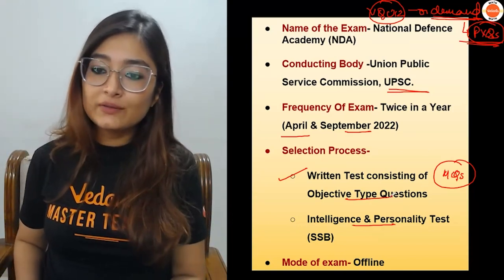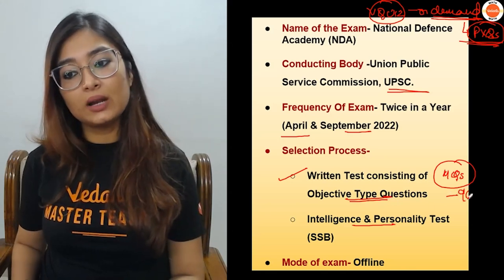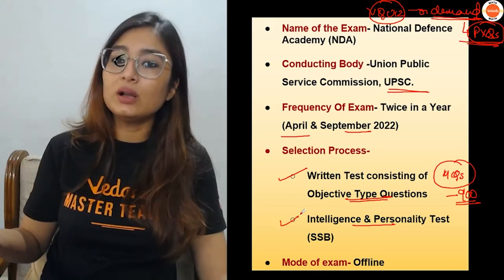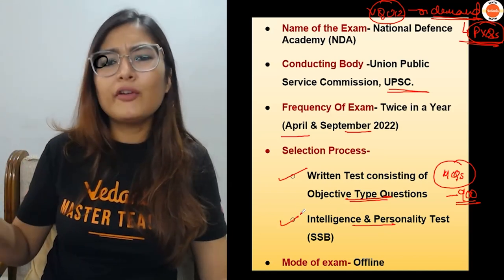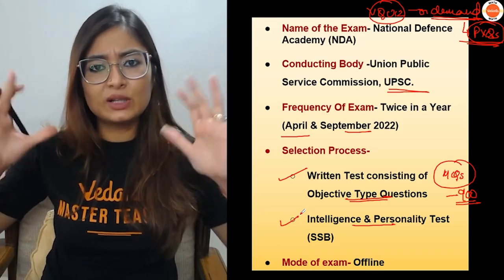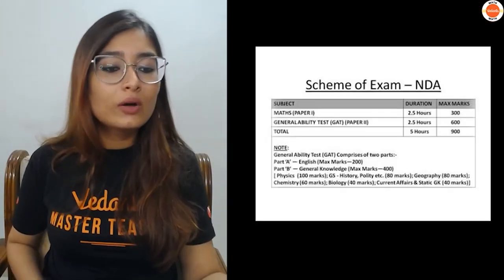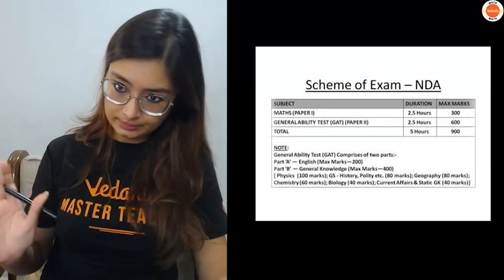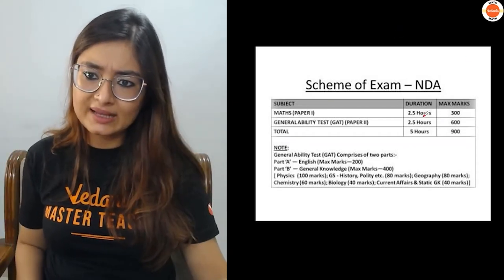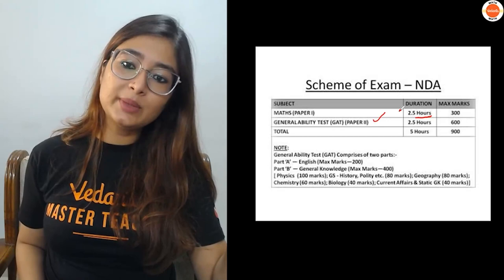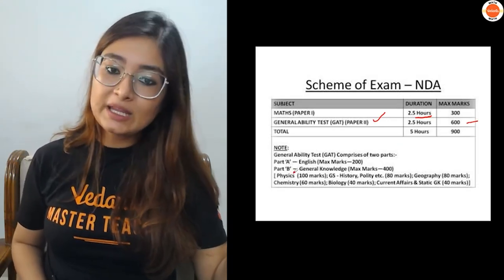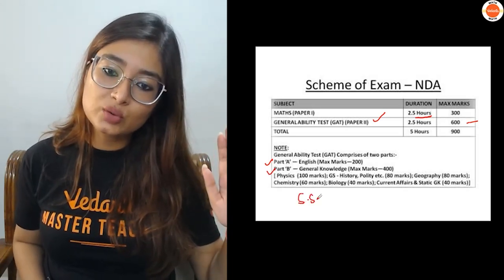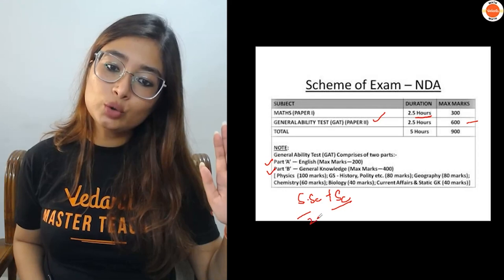If you qualify the objective test — this is a total of 900 marks — you will then take the intelligence or personality test. You also need to qualify as medically fit. These exams are offline. The first paper is worth 300 marks and will be Maths. The other paper is the General Ability Test, worth 600 marks — 200 marks in English. Part B is a combination of Social Science and Science, both worth 200 marks each.